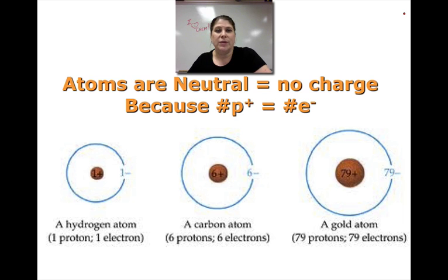First of all, this slide says atoms are neutral, and they are neutral when they have the same number of protons as they do electrons. The positive protons cancel out the negative electrons. For example, carbon has 6 protons and 6 electrons that cancel out for a neutral charge. Same thing with all of the elements on the periodic table.